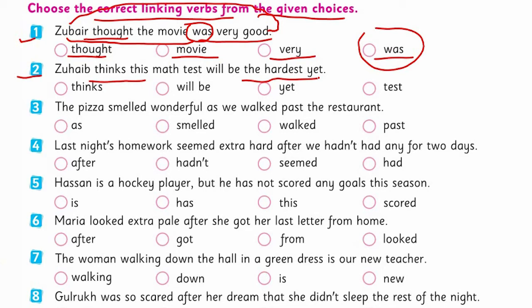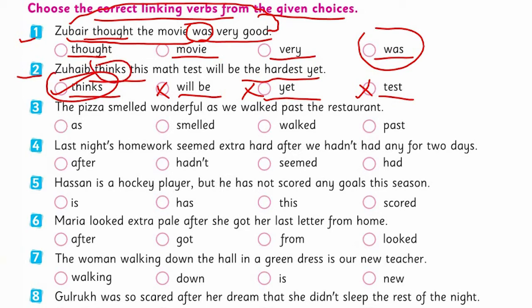The second one: 'Zubair thinks this math test will be the hardest this year.' We don't have was, is, were, am, being, or been here. 'Will be' is a modal verb here. So 'thinks' is the linking verb here — it is the main verb and it acts like a linking verb, connecting Zubair and the adjective 'hardest' with one another.